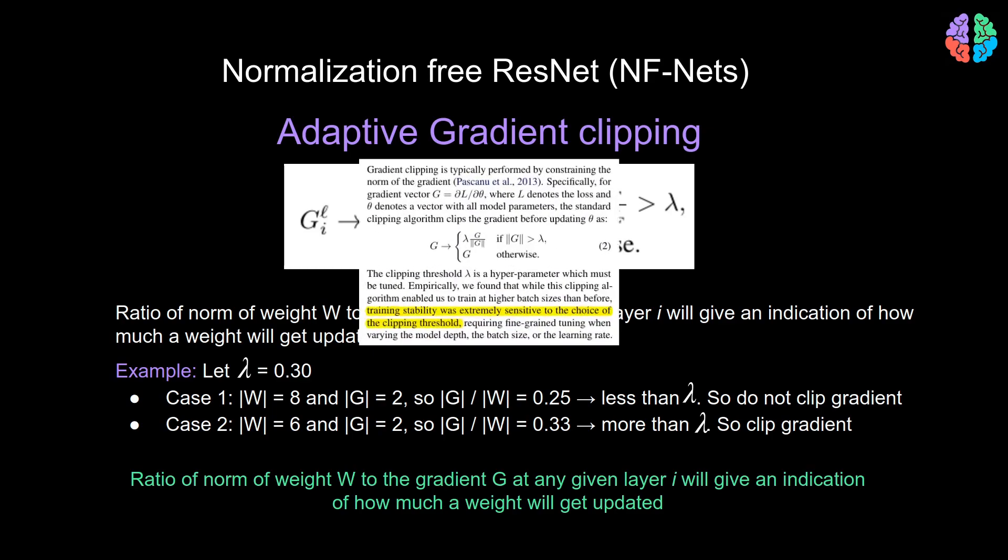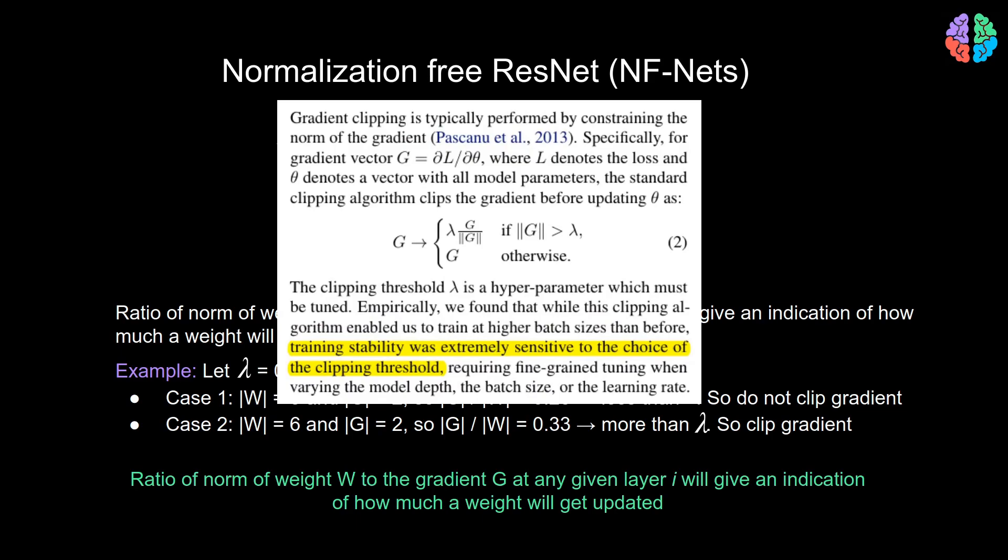But what I am struggling to understand here is how this gets rid of the dependency on lambda. Because the argument shown in the paper is that the gradient clipping, the training stability is sensitive to the choice of lambda. And so we need adaptive gradient clipping. But in adaptive gradient clipping, we still have lambda. If I were the author, I would probably argue that we need to consider the magnitude of the weights. So that was the main idea of the paper. Now let's move on to some ablation studies.